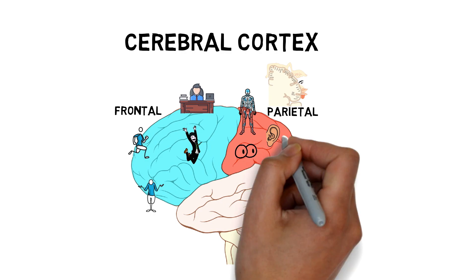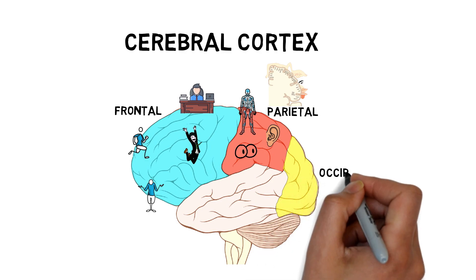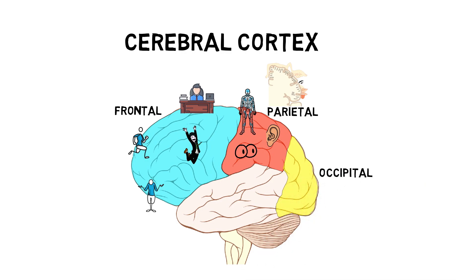Then we can move to the back here to the occipital lobe. It's the only lobe with a single unitary function: vision. It produces all of your visual perception of the world around you. The fact that so much cortex is devoted to vision shows what an important function it is for our survival. Damage to this part of the brain would effectively make you blind to everything on one side of the world.